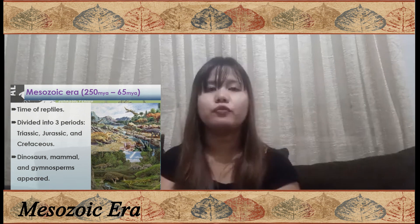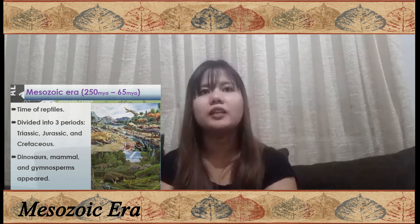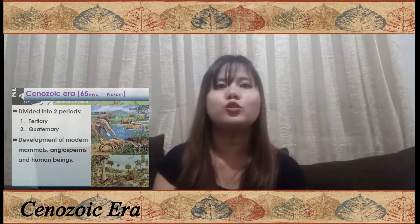The second era is the Mesozoic era, also known as the Age of Reptiles or Age of Dinosaurs. In this era, we have three periods: the Triassic, Jurassic, and Cretaceous, during which dinosaurs, mammoths, and gymnosperms thrived. At that time, the climate was warmer than today. The last era is the Cenozoic era, divided into two periods: the Tertiary and Quaternary. It is in this era that modern mammals and angiosperms flourished, and even humans first appeared.